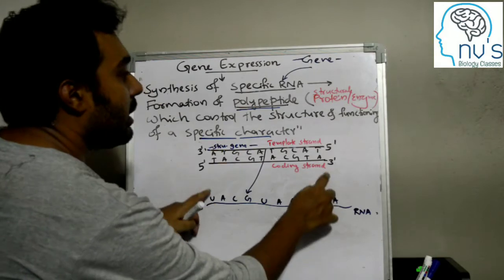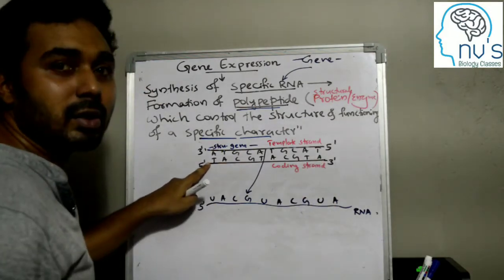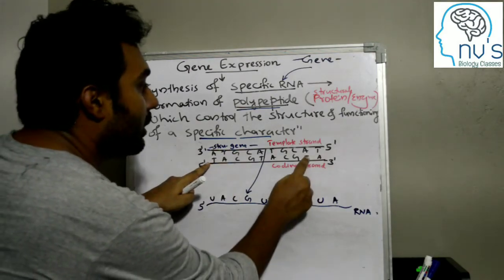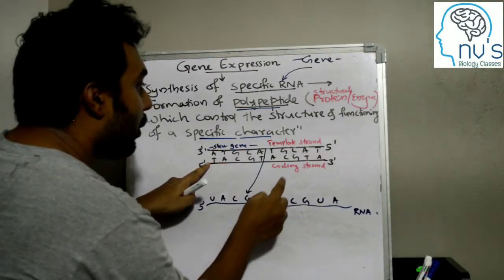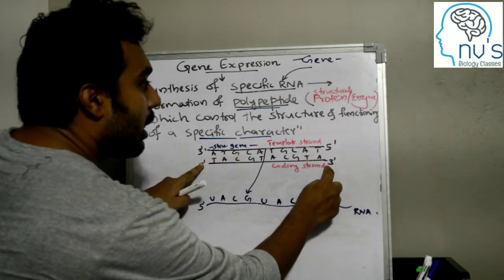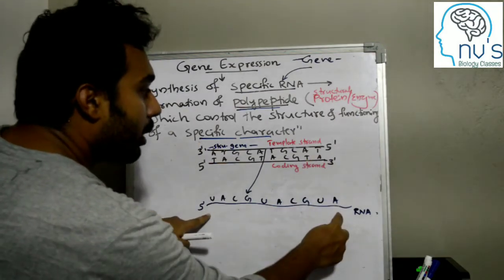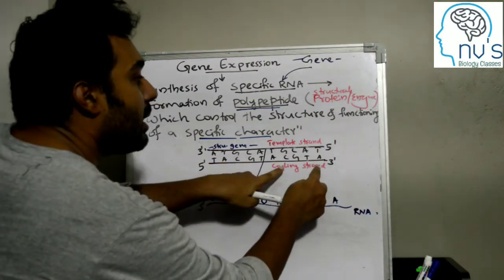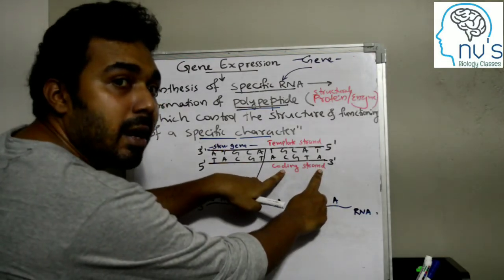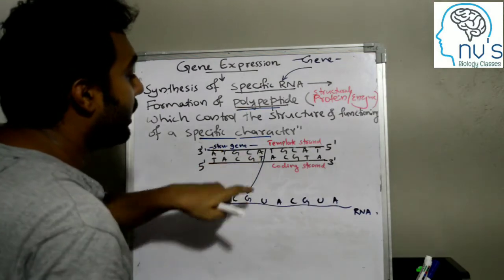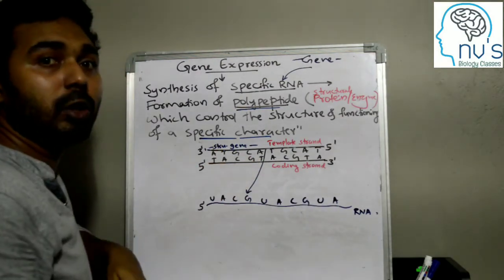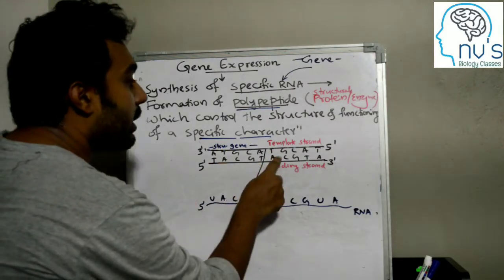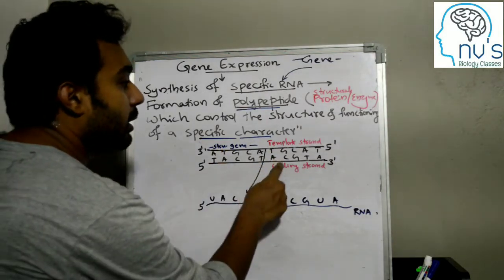That is the RNA sequence. There is a coding strand — the RNA sequence is the same as the coding strand, except thymine is replaced by uracil. You can see the DNA strand — what are the coding strand of DNA?